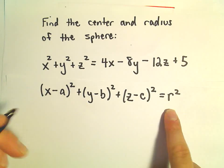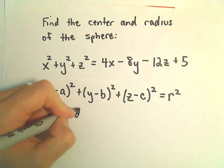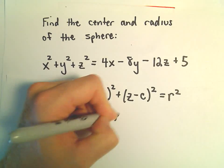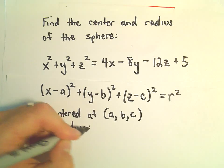Again, once we have it written like this our circle is going to be centered at the point a, b, c, and it's going to have radius of just r.